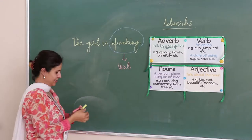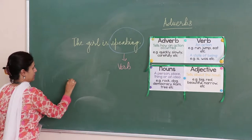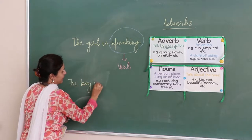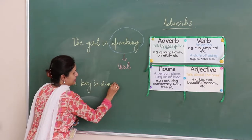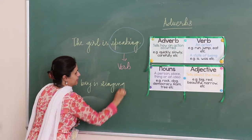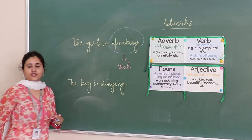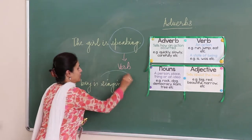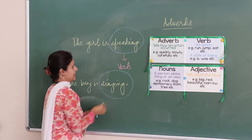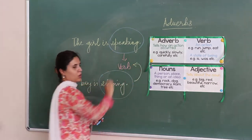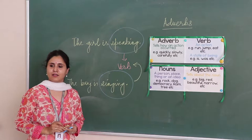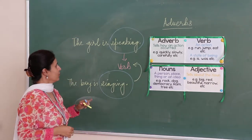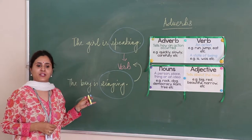Another sentence: 'Boy is singing.' Can you tell me what is the action that is happening in this sentence? Singing. Correct. So here singing is the verb. You are with me on this till now? Great. So we can now identify what are the action words.